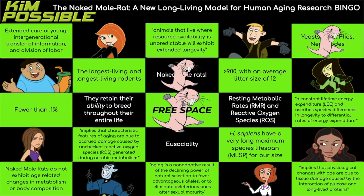What is the evolutionary theory of aging? It says that aging is a non-adaptive result of the declining power of natural selection to favor advantageous alleles or to eliminate deleterious ones after sexual maturity. So basically, over time natural selection loses its power — it's no longer as selective about cellular quality, and it's not great at eliminating alleles that are bad for us, so they build up over time.